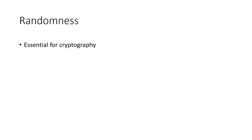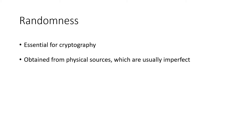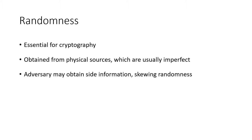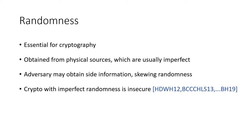Let me begin by introducing you to our setting. We consider the problem of randomness extraction. Randomness is extremely useful for all sorts of cryptographic applications. It is often obtained from physical sources, which are usually imperfect. In many settings, an adversary may be able to obtain side information about the randomness that was generated and therefore be able to attack the system. There have been instances in the literature demonstrating that cryptography instantiated with imperfect randomness can often be broken completely.